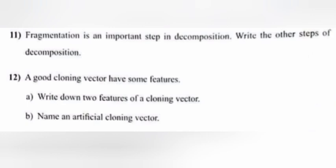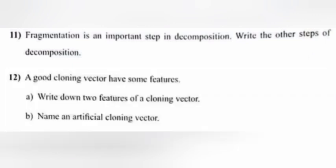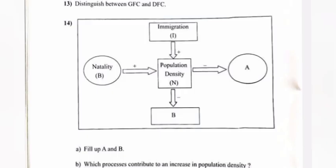Question 12: A good cloning vector has some features. Part A: Write down two features of a cloning vector. Part B: Name an artificial cloning vector. Answer A: Origin of replication, single recognition sequence, cloning site or selectable marker or ROP — write any two. Answer B: pBR322.